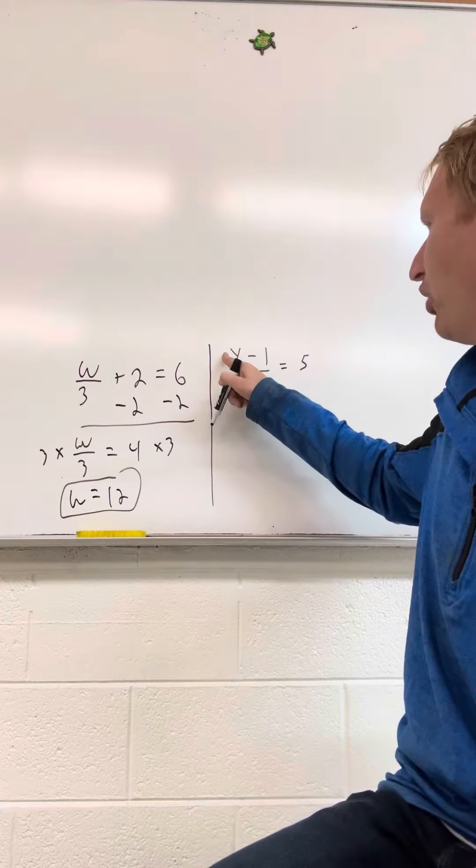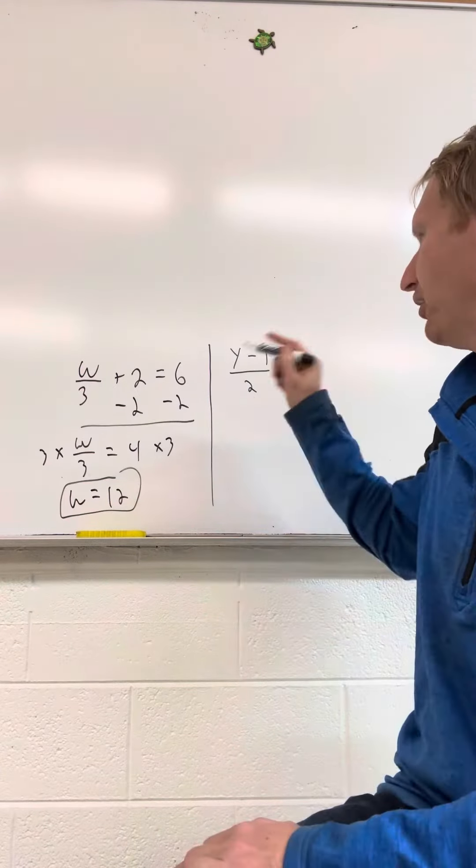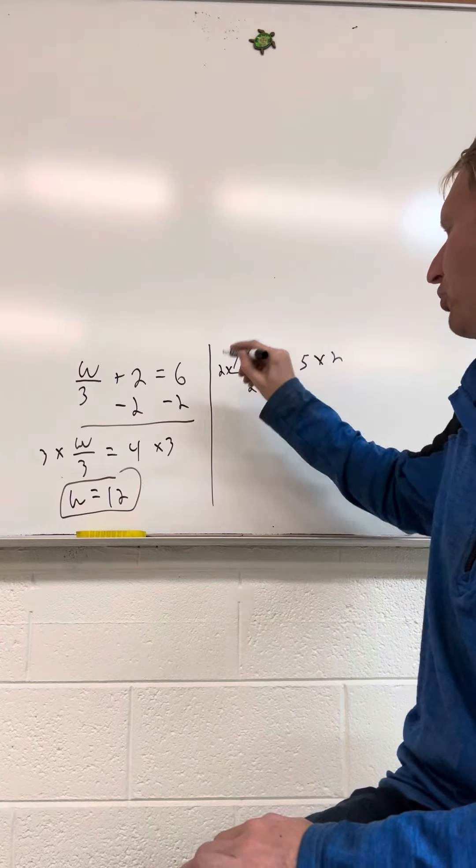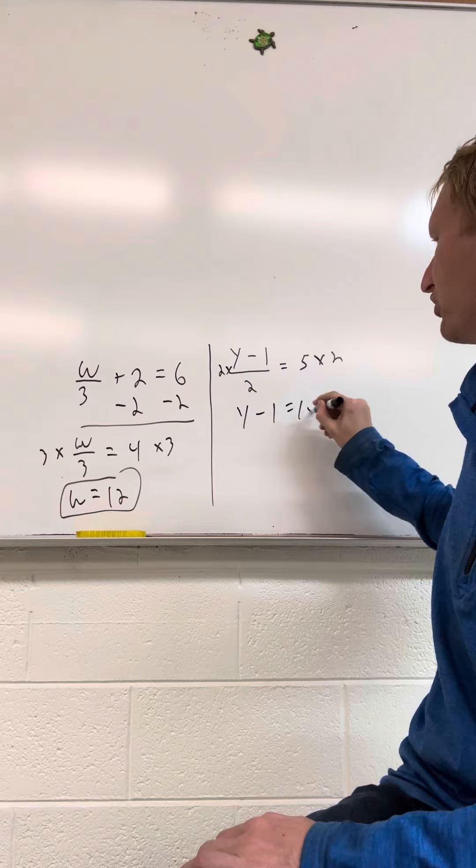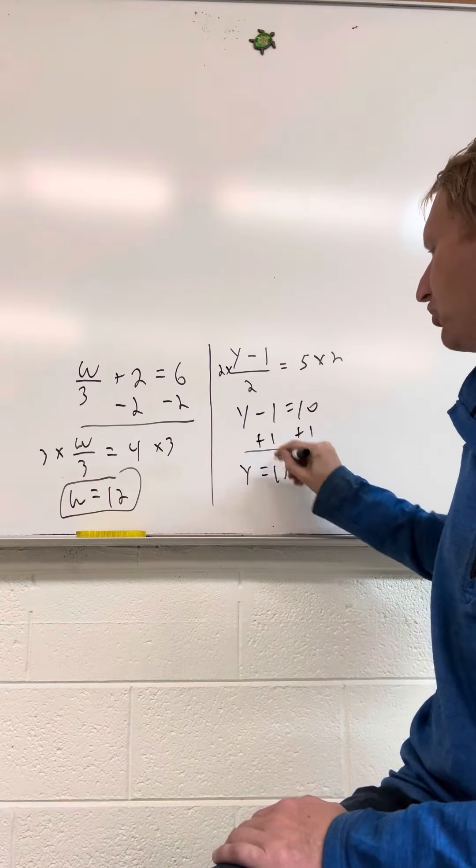Now, in the second one, we have y minus 1, that entire quantity divided by 2 equals 5. And in this case, we're going to multiply both sides by 2 first. And then the 2s will divide out, and you get y minus 1 equals 10. And then we're going to add 1 to both sides, and you get that y is equal to 11.